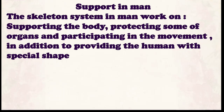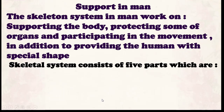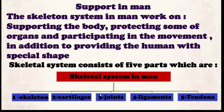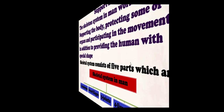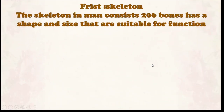The skeleton system provides the human body with a special shape. The skeleton system consists of five parts: number one, skeleton bones; number two, cartilage; number three, joints, which are the meeting point between two bones; number four, ligaments; and number five, tendons.